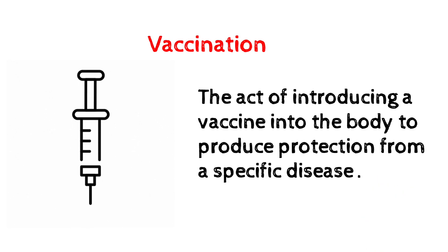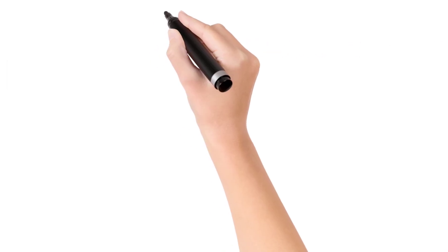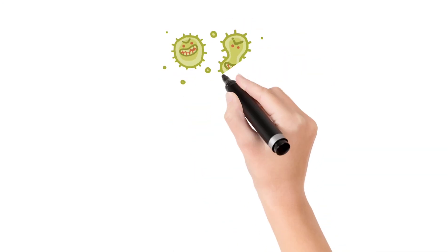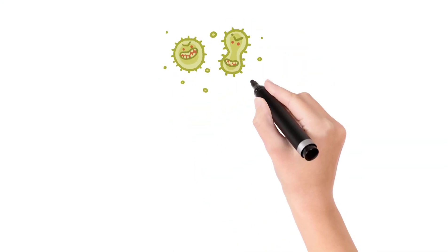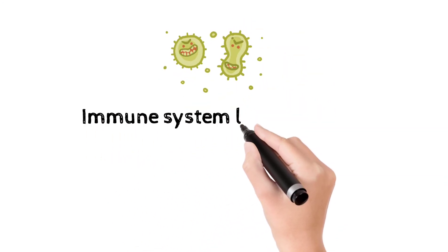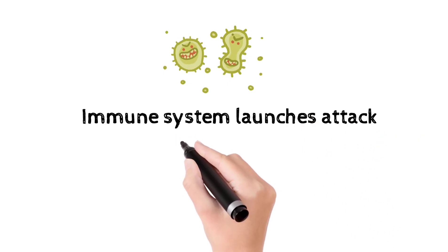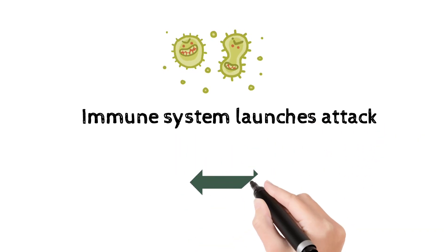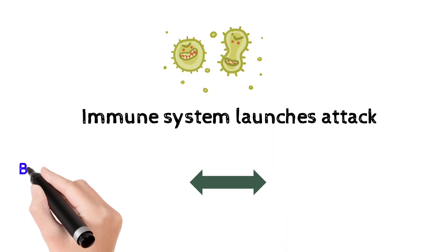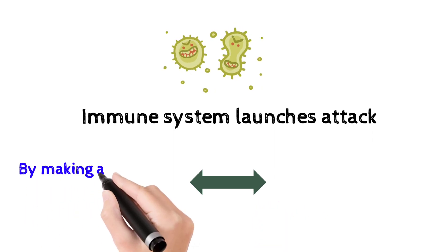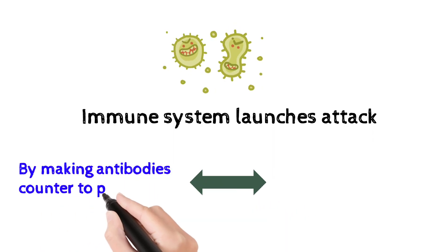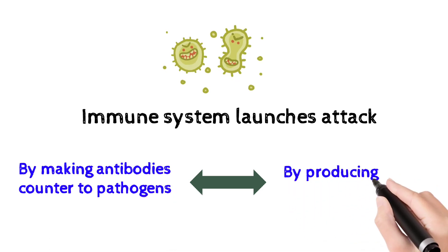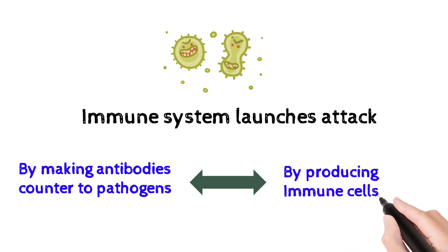In this adaptive immunity process, whenever a pathogen enters into our body, the immune system launches an attack. It does this by making antibodies against the pathogens, and by producing immune cells. These are the two main processes involved.